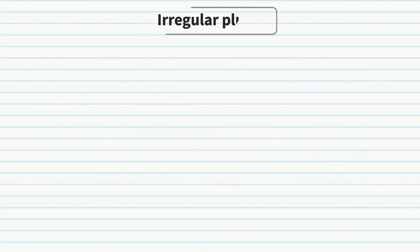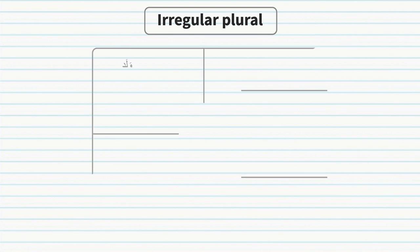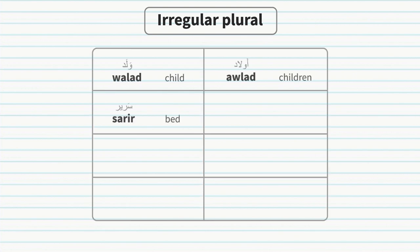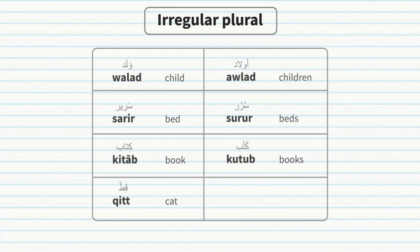The broken or irregular plurals in Arabic have many different patterns, so it is recommended to learn both the singular and plural form of each new word. Some examples: walad/awlaad, sarir/surur, kitab/kutub, qit'a/qita'.